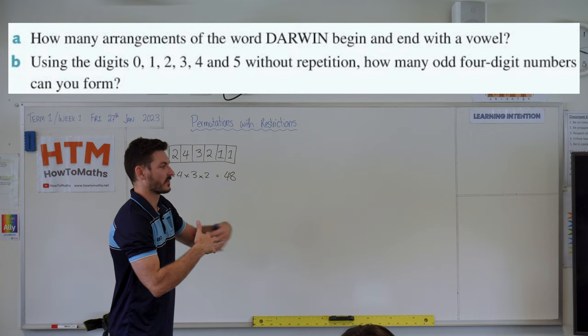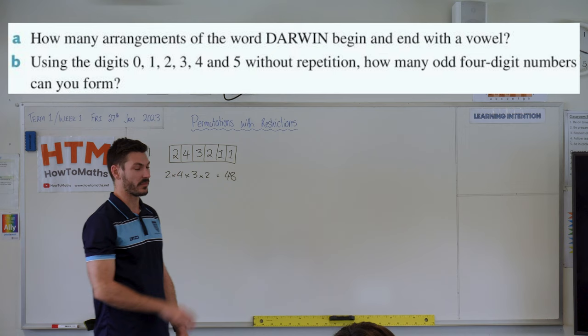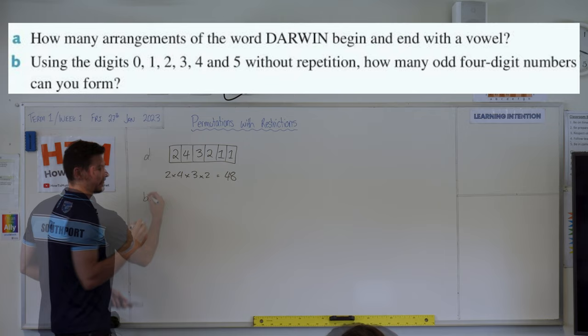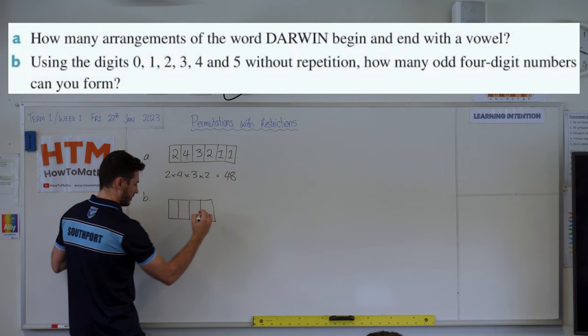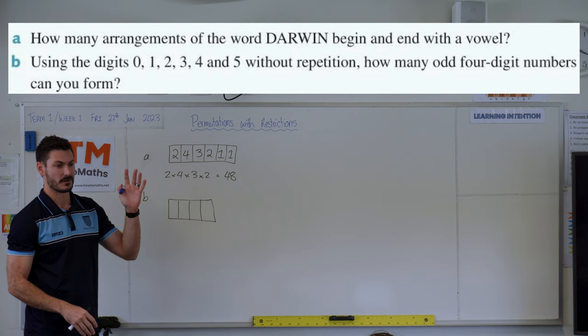So B, using the digits 0, 1, 2, 3, 4 and 5, without repetition, how many odd four-digit numbers? Okay, so the four-digit number is going to be how many boxes we've got. Even though we've got six digits there, we've only got a four-digit number. And the restriction on this number is, well, first of all, without repetition, but the main restriction is that the number is odd.